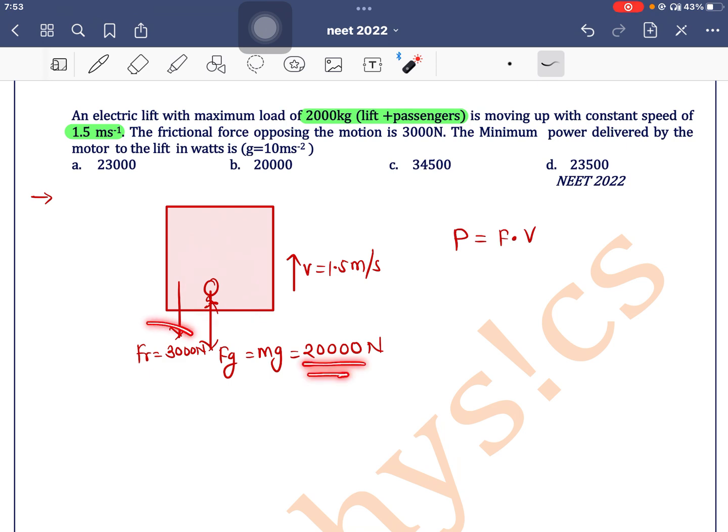Adding the opposing frictional force: P = (Fg + Fr) × V = (20,000 + 3,000) × 1.5 = 23,000 × 1.5 = 34,500 Watts. Therefore, option C is the correct answer.